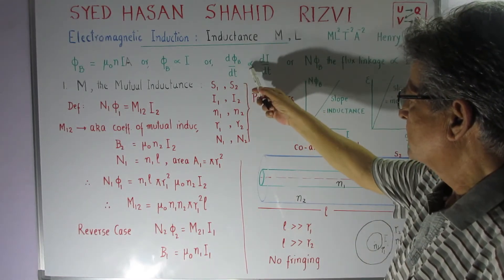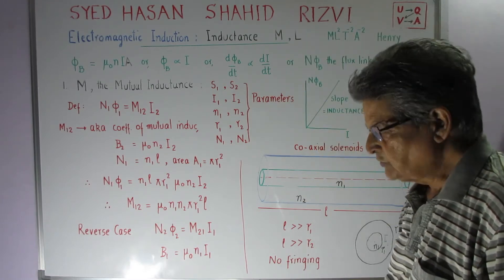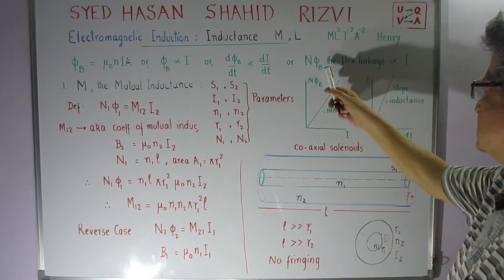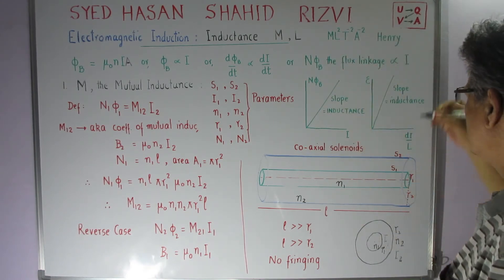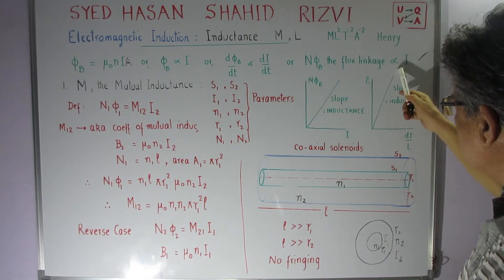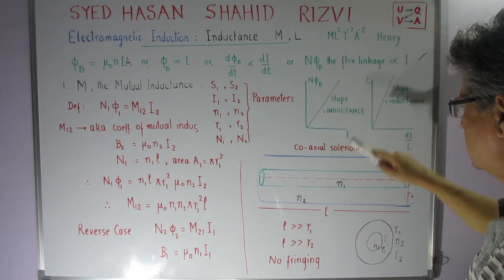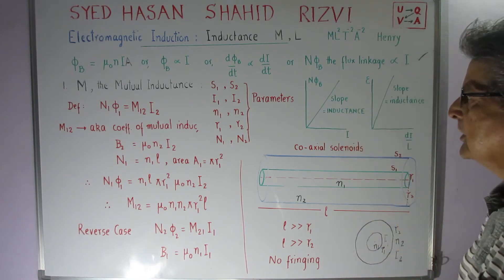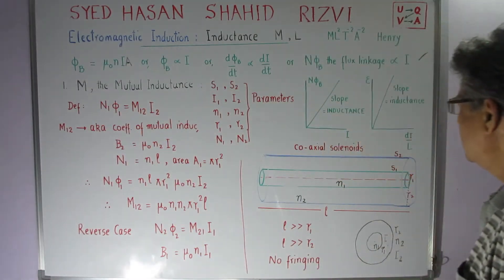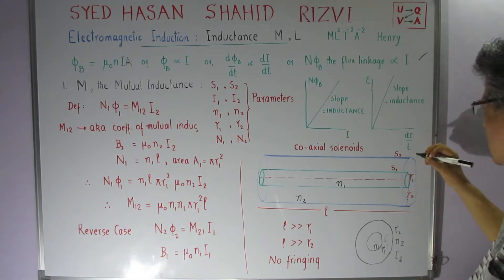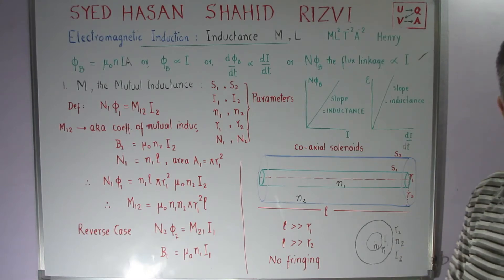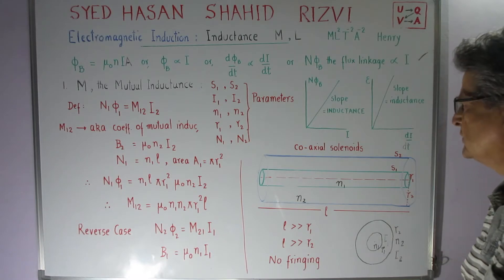Therefore, dφ_B/dt is proportional to dI/dt. If the number of turns is N, then Nφ_B — which is called the flux linkage — is also proportional to the current. The constant of proportionality, that is the slope of the Nφ_B vs. I curve, is the inductance. Similarly, from dφ_B/dt we get the EMF, and the slope relating it to dI/dt is also the inductance.